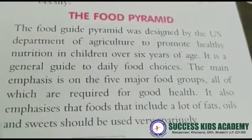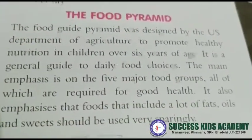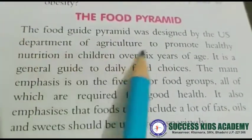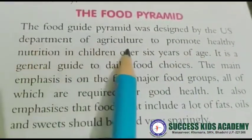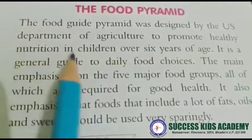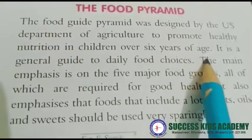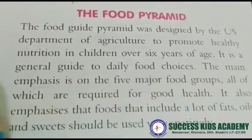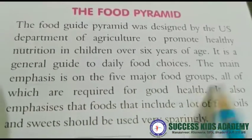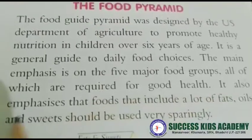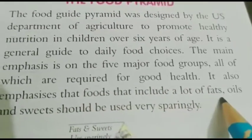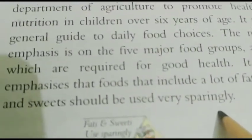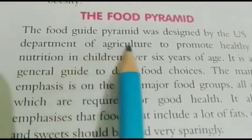Good morning to the students of class 6. This is the next video of subject science, page number 17. The food guide pyramid was designed by the U.S. Department of Agriculture to promote healthy nutrition in children over six years of age. It is a general guide to daily food choices. The main emphasis is on the five major food groups, all of which are required for good health. It also emphasizes that foods that include a lot of fats, oils, and sweets should be used very sparingly.